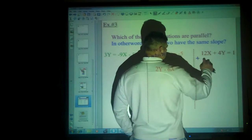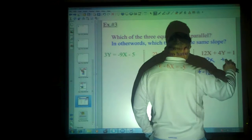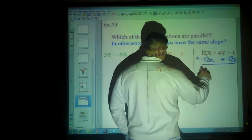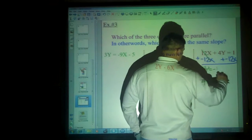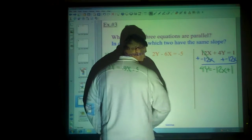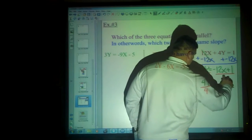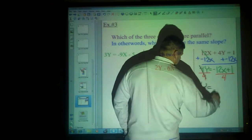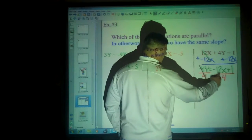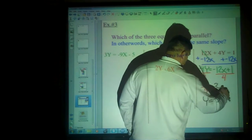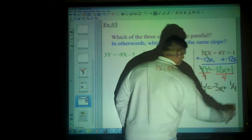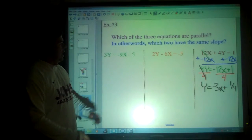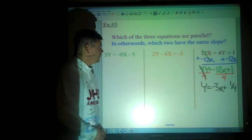So here we want to get y alone. We'll add negative 12x to both sides. And now we have 4y equals negative 12x plus 1. We then divide by 4. And that gives us y equals, remember heart-shaped division, negative 12 over 4 is negative 3x. And 1 over 4 is 1 fourth. Now, it's okay to have a y-intercept that's a fraction. That's not a big deal. I'm mostly concerned with slopes.